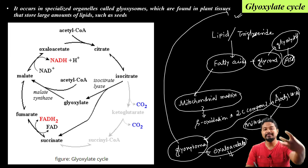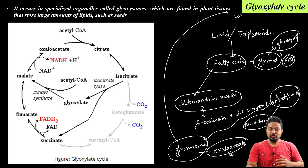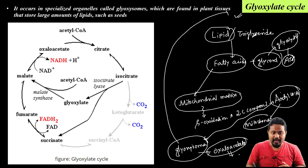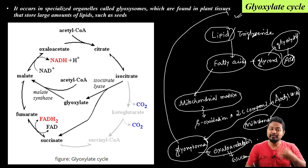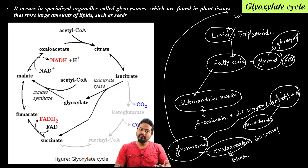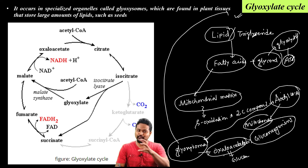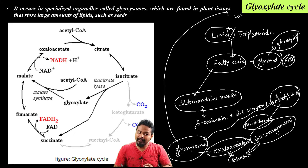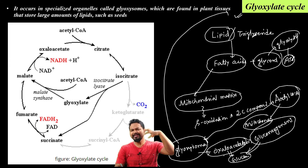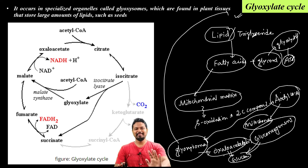Through the gluconeogenesis process, oxaloacetate is ultimately used to produce glucose. So the glyoxylate cycle produces oxaloacetate, which then enters gluconeogenesis to finally give us glucose from lipids. Gluconeogenesis will be discussed in the next class.